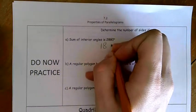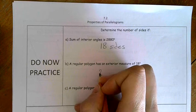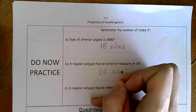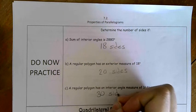For the first one, you should have gotten 18 sides. For the second one, you should have gotten 20 sides. And for the third one, you should have gotten 30 sides.